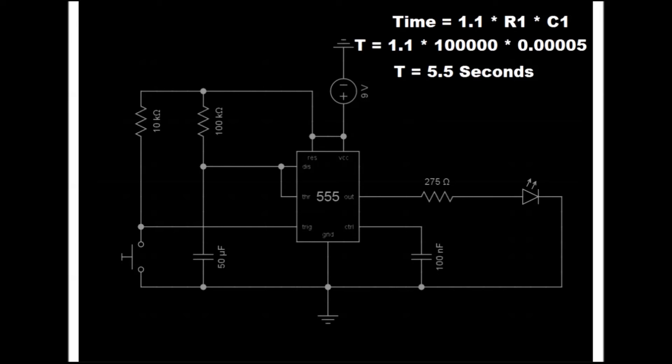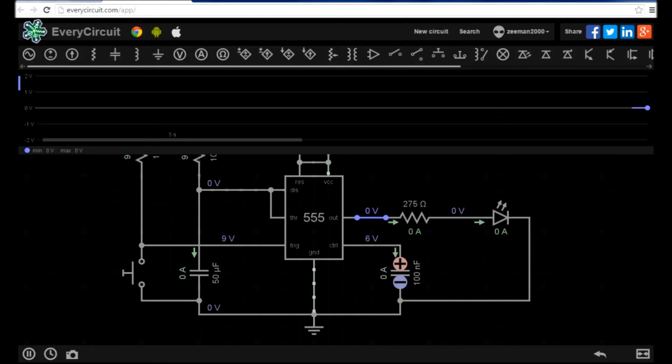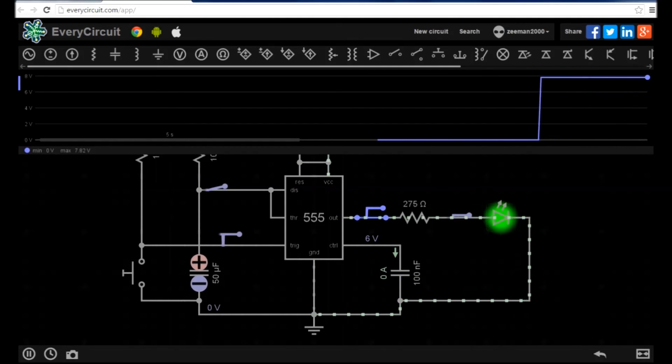Let's now run the simulation and see the working model. When we press the button, the LED lights for 5.5 seconds. We can see the time the signal stays high by using the waveform viewer. Adjusting R1 and C1 will adjust the amount of time that pin 3 gives a high signal.